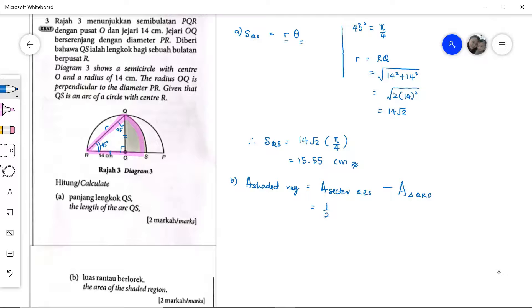That will be half R squared. That will be 14 root 2 squared, and then theta, that is pi over 4, and then minus the triangle. Now we shall not use the formula half AB sine C, because that would be the triangle formed by QRS. This is a different triangle. Don't just use the formula you have learned before blindly. Look at the diagram and study the condition of the triangle given. With this one, we can use half times base times height.